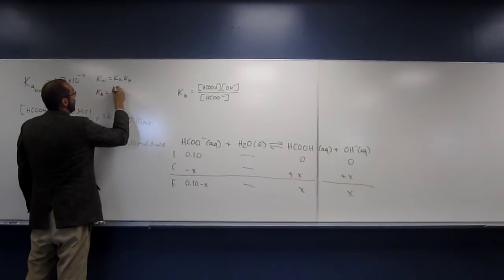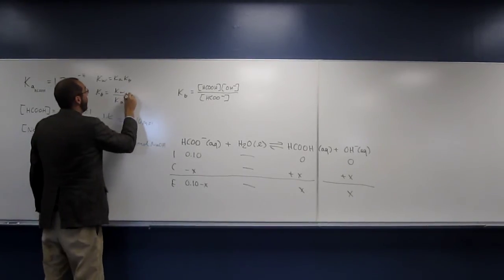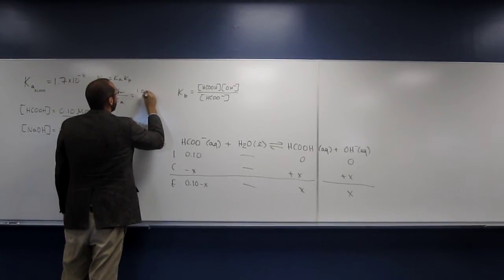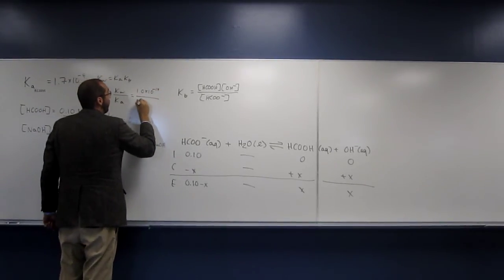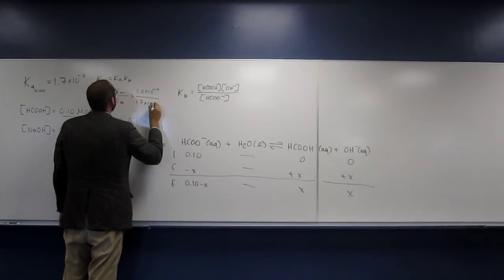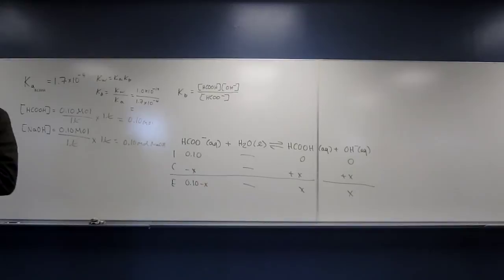That's going to be KW divided by KA. So this is 1.0 times 10 to the negative 14th, divided by 1.7 times 10 to the negative 4th. So let's do that together.